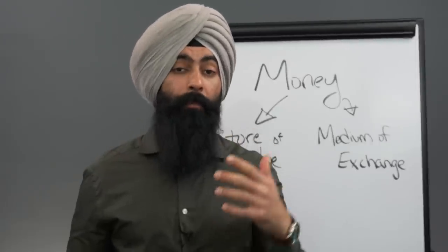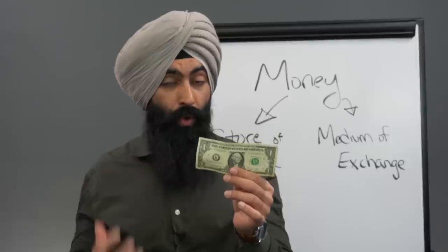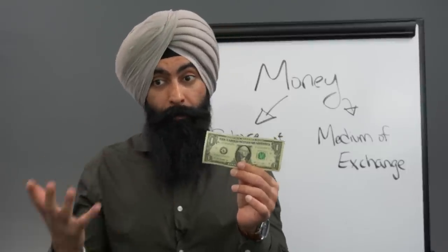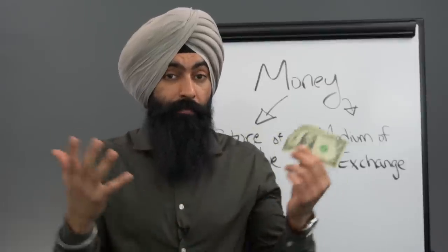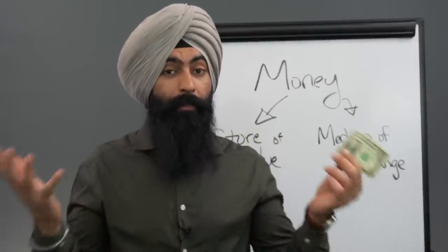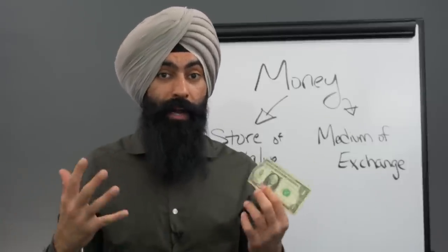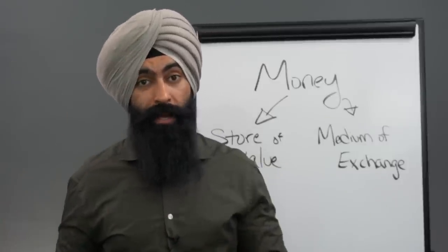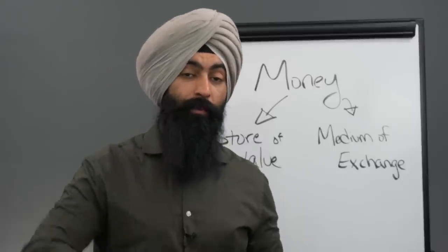That single sentence changed our money forever because now our paper dollars were no longer backed by physical gold, which meant that the government had the ability to spend as much money as they wanted because now the Federal Reserve Bank had free will to print money as much as they wanted because we didn't need more gold to print more money. Now, it was very easy for the government to pay off their debts because the Federal Reserve Bank could print as much money as they needed. They gave this money to the government, and the government paid off their debts.